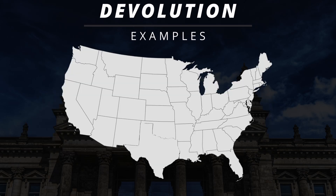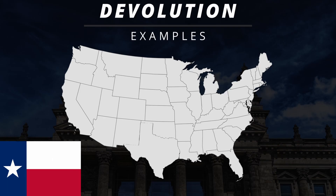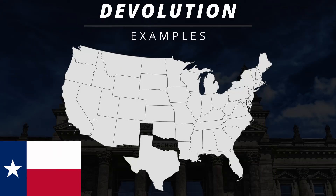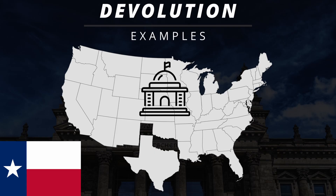Let's use a hypothetical example to demonstrate. Say that our good old Lone Star State said that they've had enough of the United States and wanted to break free from the U.S. In this case, because the power is shifting from the federal government and moving to the state government, this would be a perfect example of devolution.